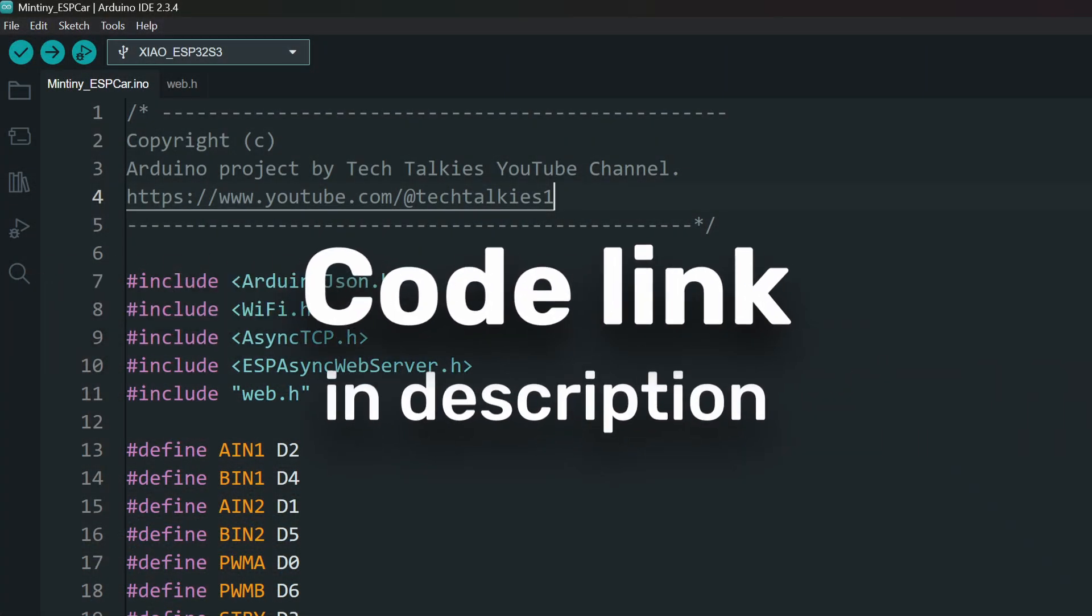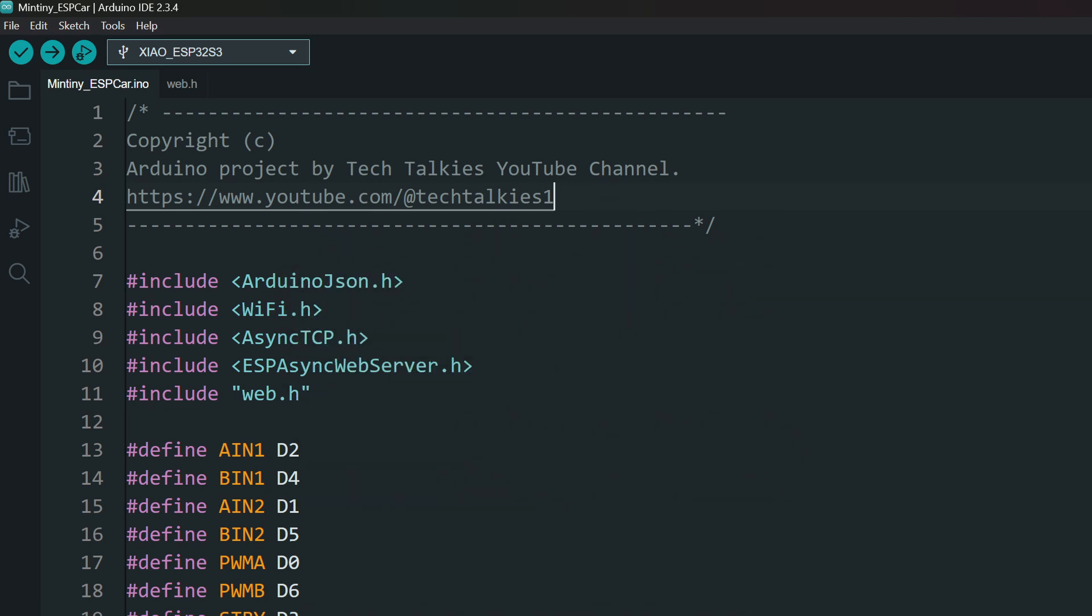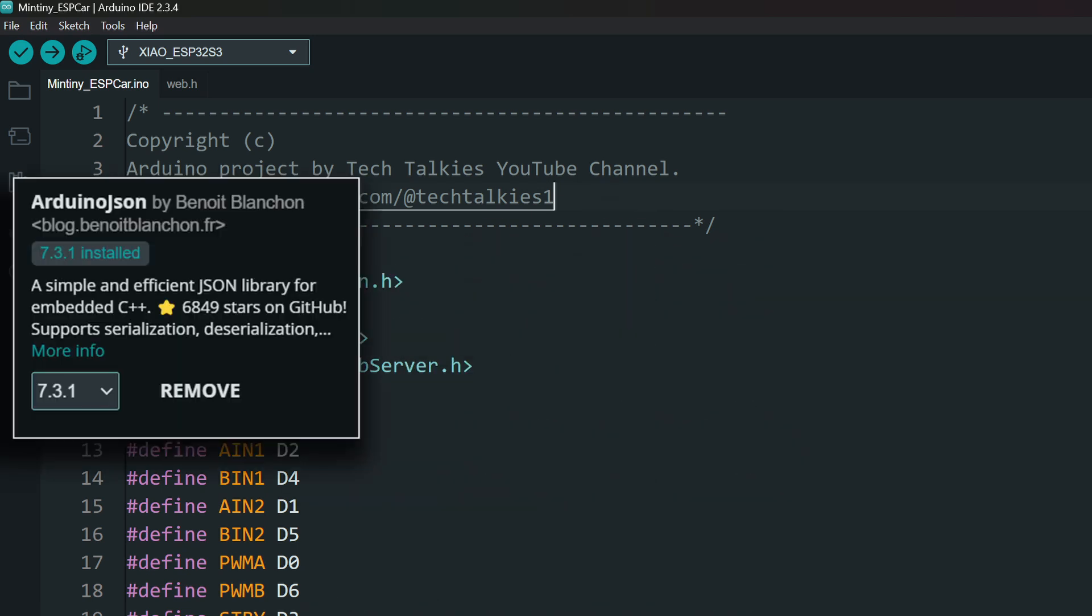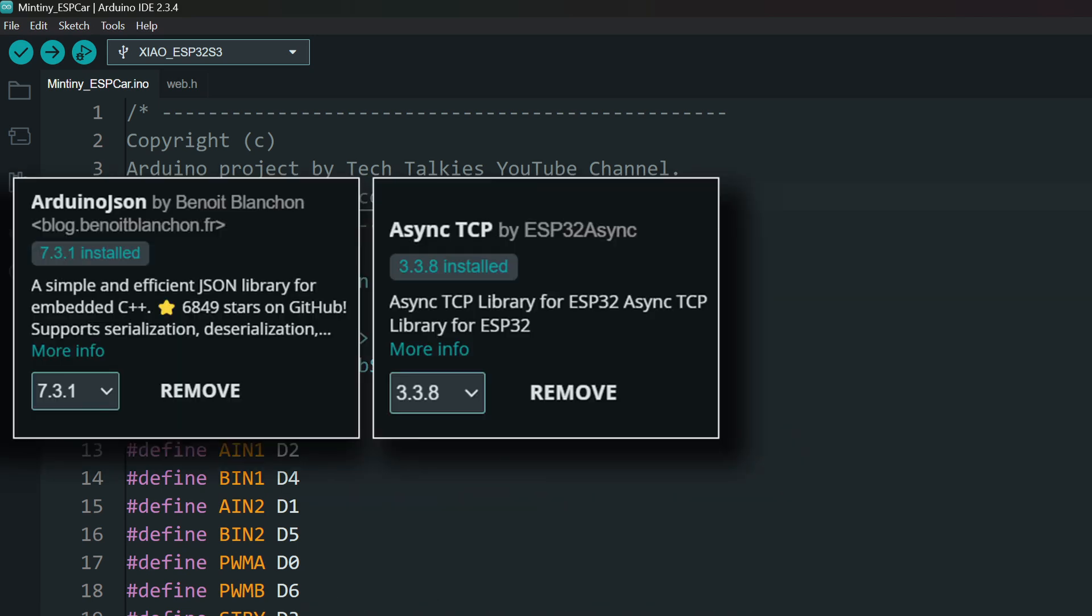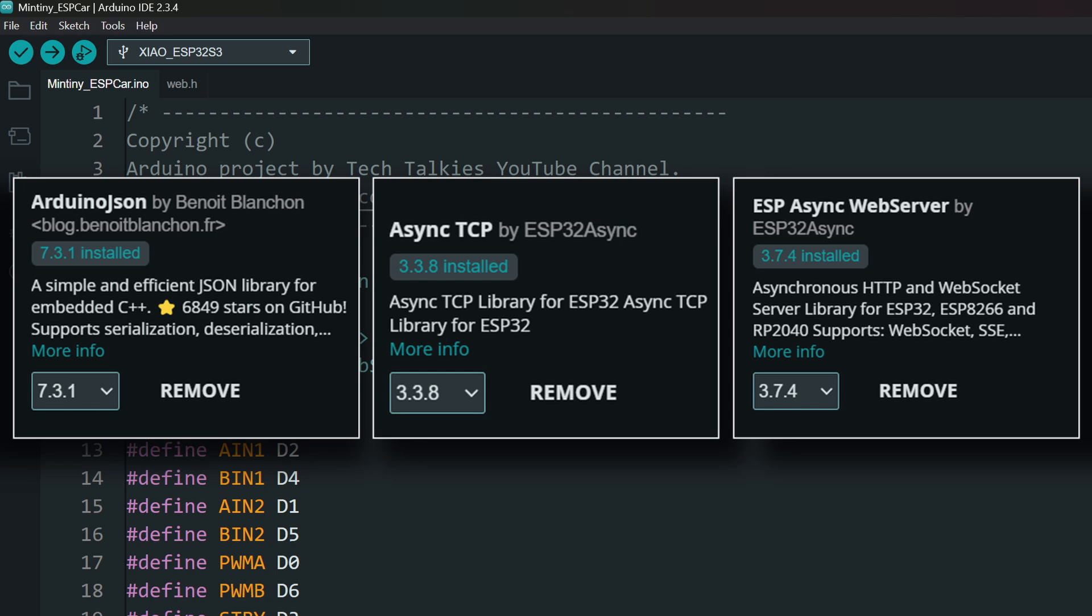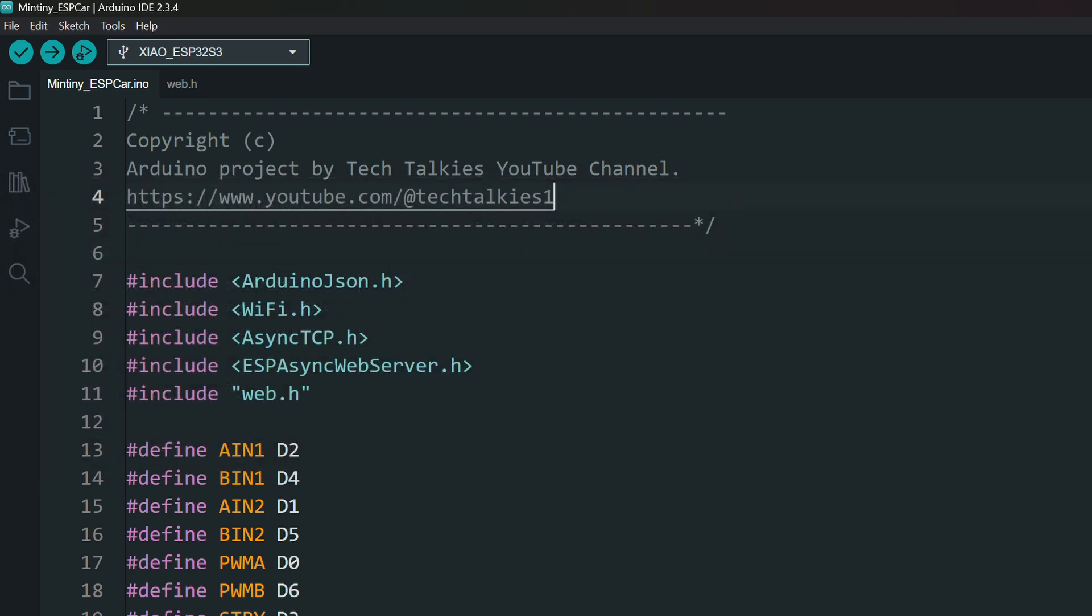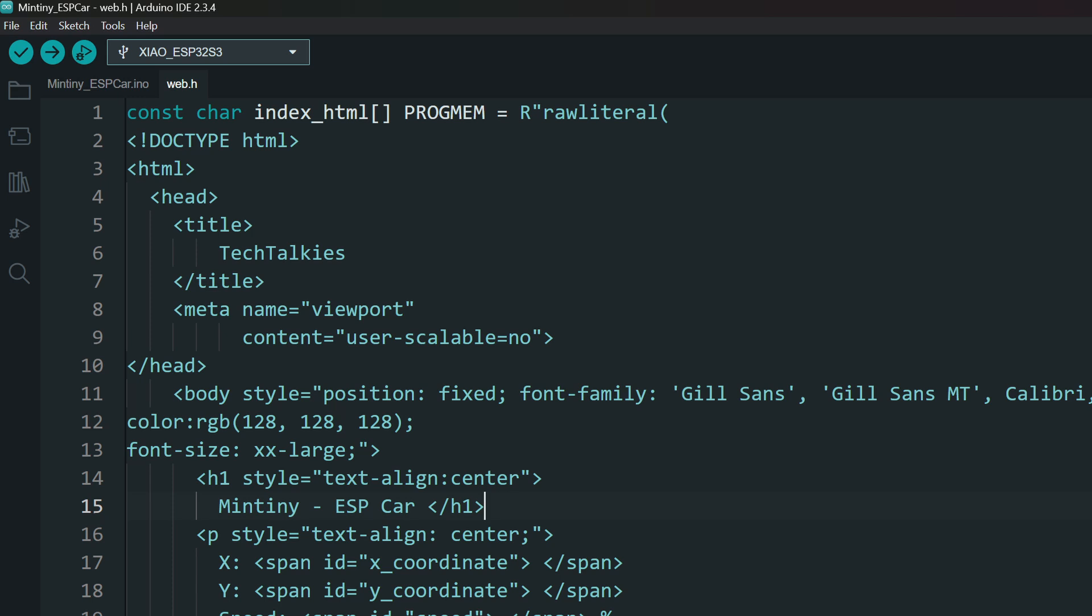Here, we will be using these libraries: Arduino JSON, Async TCP, and ESP async web server. Install these libraries from the library manager. The web page for the web server is included in a separate file in the project. Make sure to include that too.